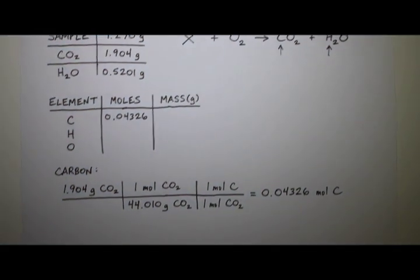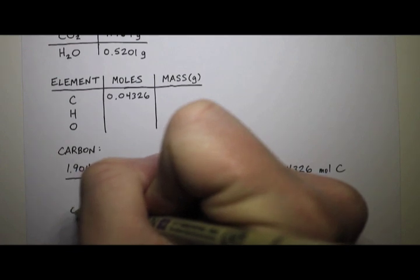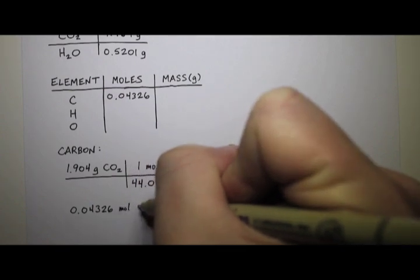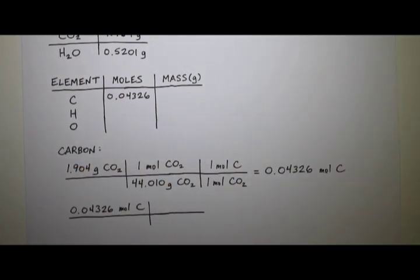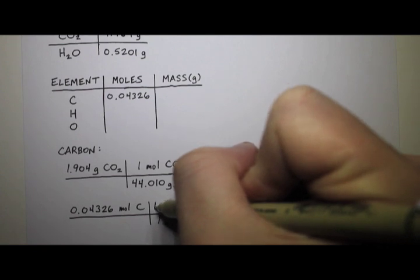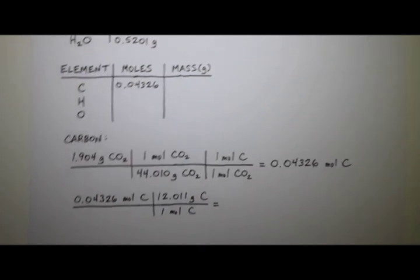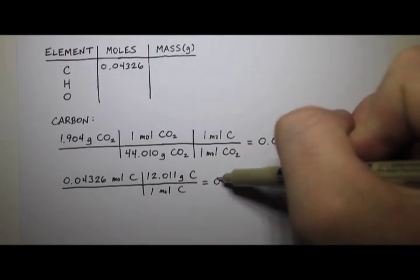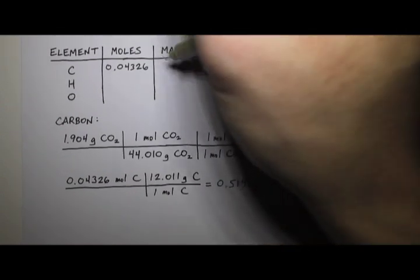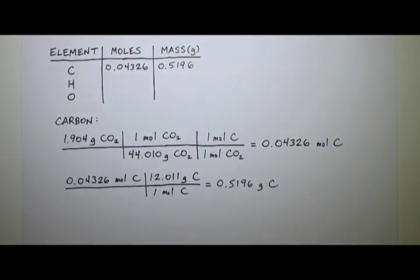Now we want the mass of carbon. Well, if we have the moles of carbon, it's pretty easy to get the mass of carbon. Just do another conversion here. So 0.04326 moles of carbon. And we know that one mole of carbon is 12.011 grams of carbon. And again, that comes from the periodic table. You can look that up for carbon. And so when you do this, you get 0.5196 grams of carbon. Great. That can go under mass of carbon, 0.5196.